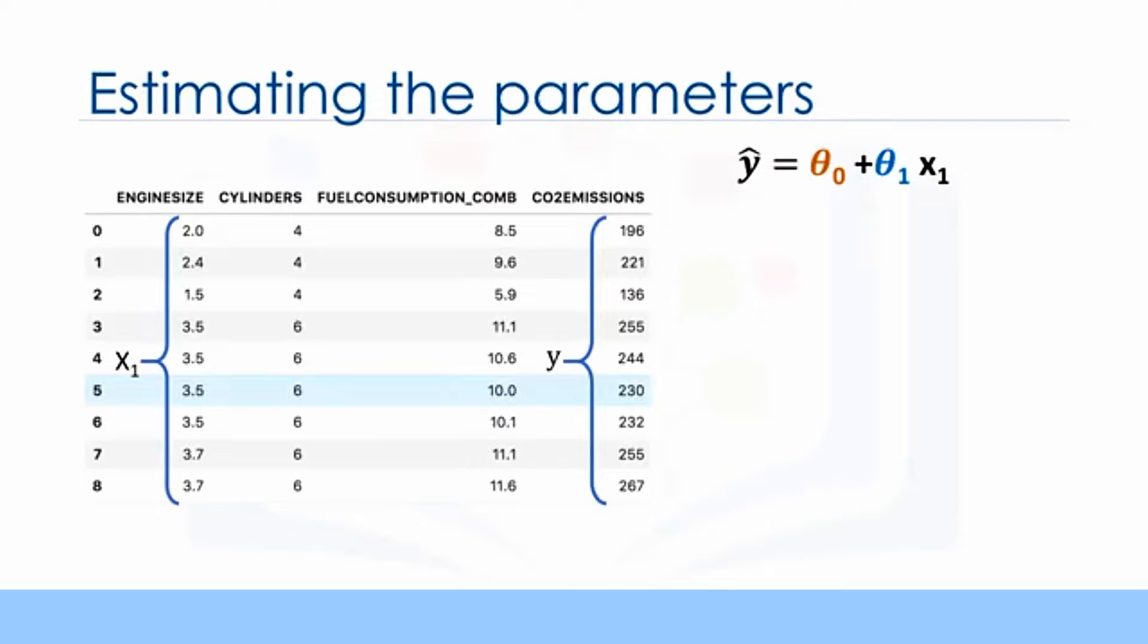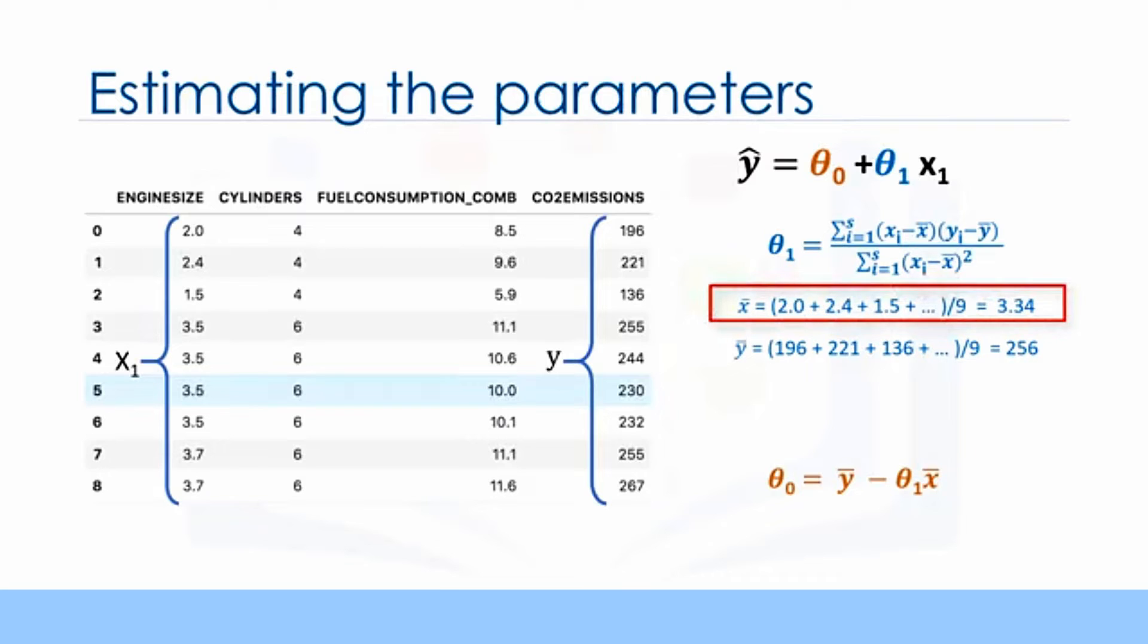That is, given that it's a simple linear regression with only two parameters, and knowing that theta 0 and theta 1 are the intercept and slope of the line, we can estimate them directly from our data. It requires that we calculate the mean of the independent and dependent, or target columns, from the dataset. Notice that all of the data must be available to traverse and calculate the parameters. It can be shown that the intercept and slope can be calculated using these equations. We can start off by estimating the value for theta 1. This is how you can find the slope of a line based on the data. X bar is the average value for the engine size in our dataset. Please consider that we have nine rows here, row 0 to 8.